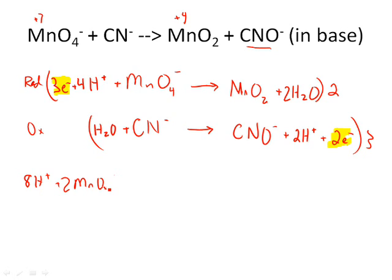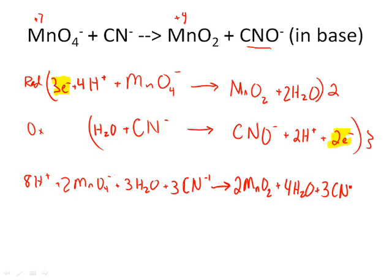2 MnO4 negative ions, 3 H2O ions, and 3 CN minus 1 ions. 2 MnO2 and 4 H2O, and 3 CNO minus, and 6 hydrogen ions.